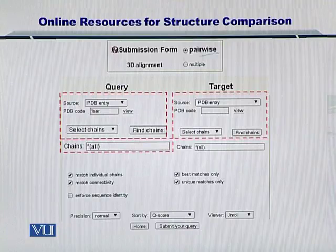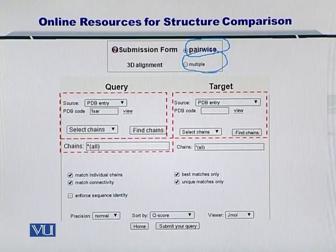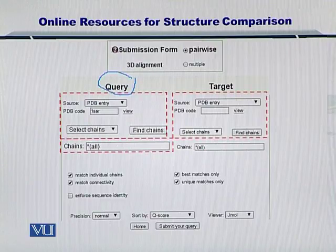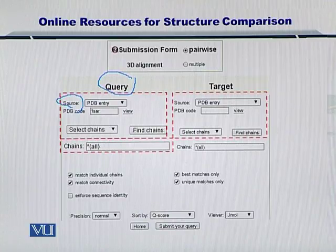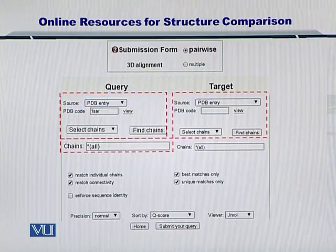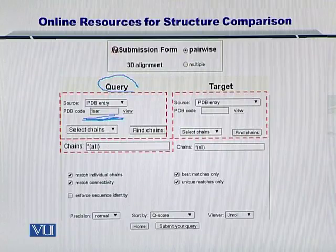The pairwise will simply tell you about comparing two proteins while multiple will be about comparing multiple proteins. If you look at the left side, you can see the query box in the red dotted square and you can select the source or the query protein by looking at its PDB entry. Here you can also provide its PDB code. If you know which query protein you are using and its PDB code, then you can input it here.